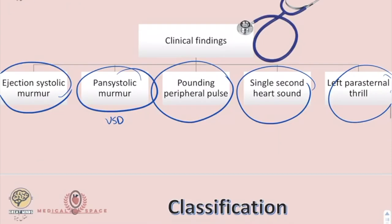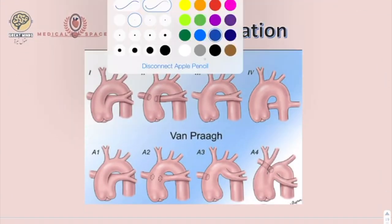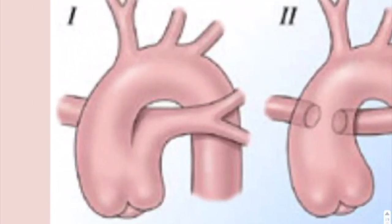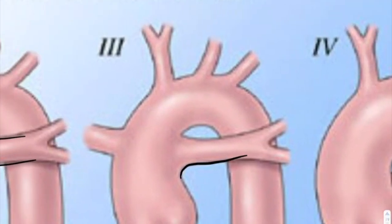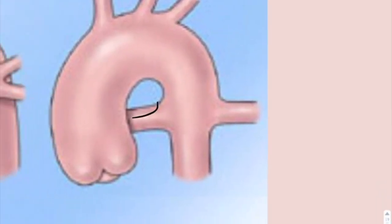Truncus Arteriosus has two classification systems. In the older classification: Type 1 — the pulmonary artery arises from the truncus and divides into right and left pulmonary arteries. Type 2 — right and left pulmonary arteries arise from the posterior side of the truncus, close together. Type 3 — right and left pulmonary arteries arise from the lateral side of the truncus, away from each other. Type 4 — collateral arteries from the descending aorta supply the right and left pulmonary arteries.